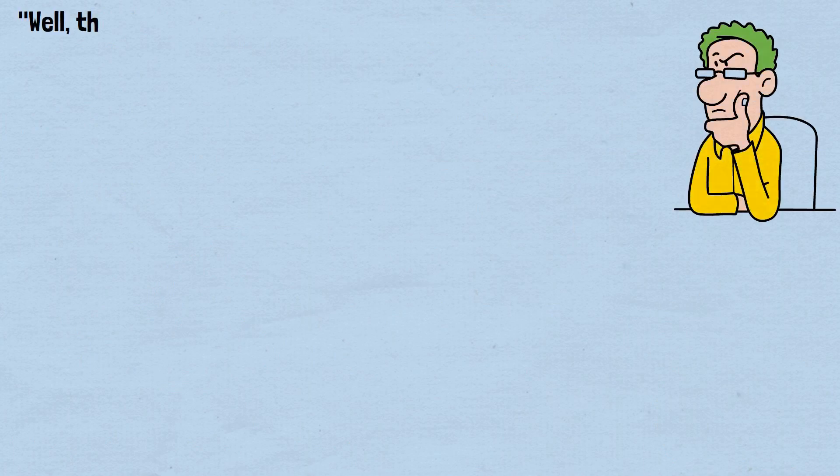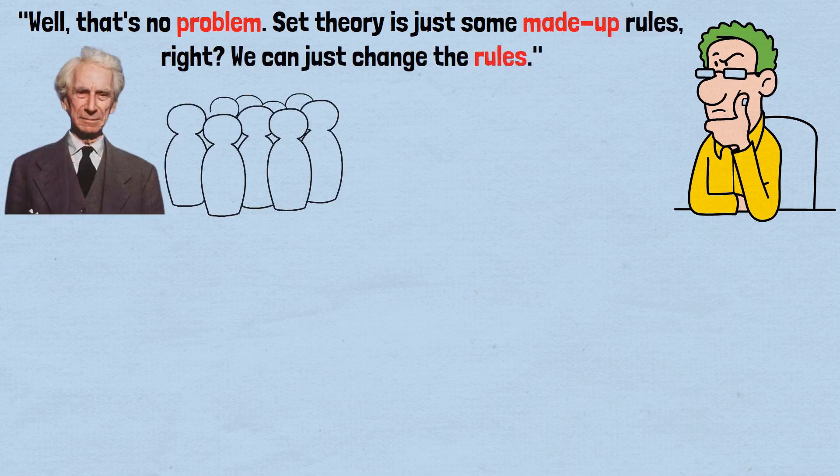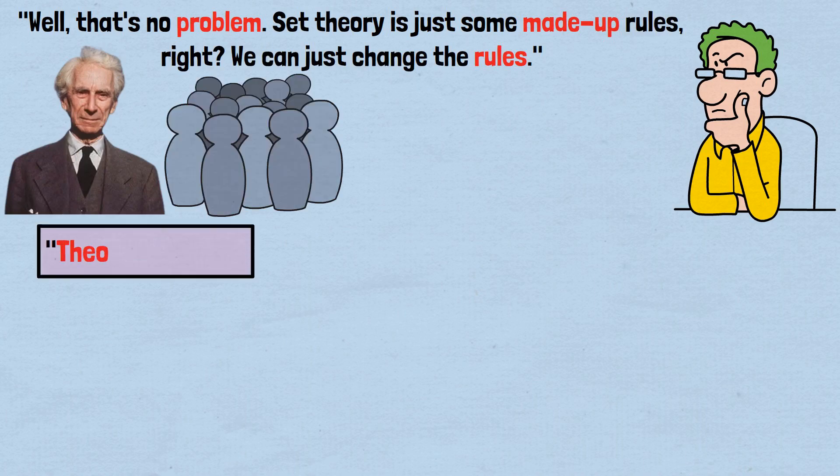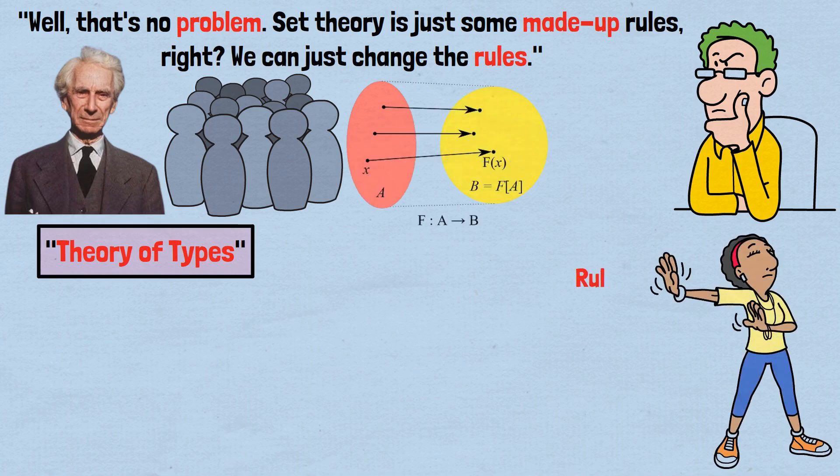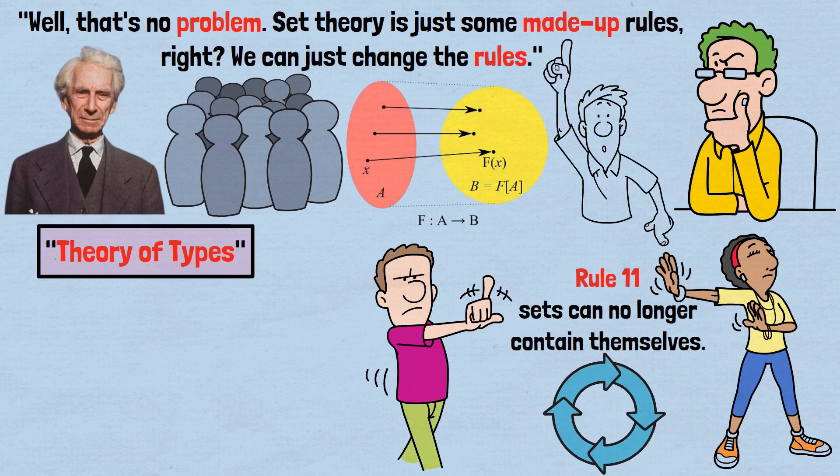You might think, well, that's no problem. Set theory is just some made-up rules, right? We can just change the rules. That's exactly what Russell and other mathematicians tried to do. Russell developed his theory of types, and others created systems like Zermelo-Fraenkel set theory, both of which restrict rule 11. Sets can no longer contain themselves. These systems also had to modify rule 1, no longer allowing unrestricted composition of sets.